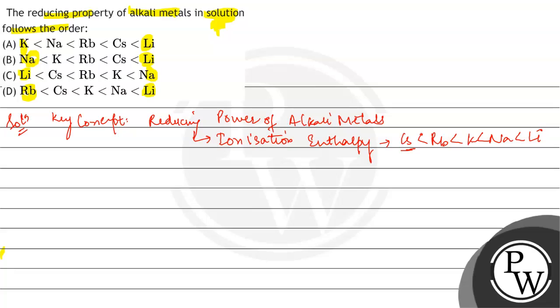If caesium has the least ionization enthalpy, that means it will lose its electron and become caesium plus ion most readily. So caesium's reducing power should be the highest.